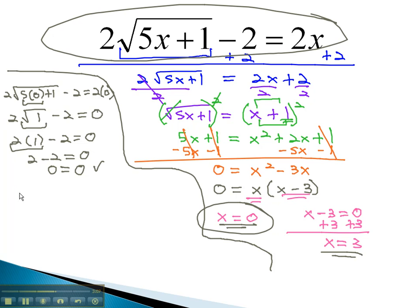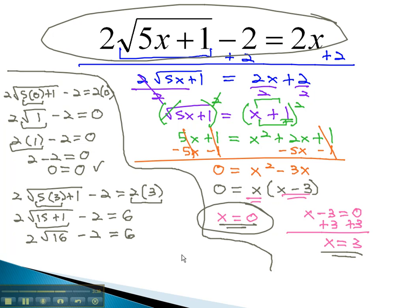Let's also check x equals 3. 2 times the square root of 5x, or 5 times 3, plus 1, minus 2, equals 2x, or 2 times 3. Multiplying first, we get 2 times the square root of 15, plus 1, minus 2, equals 6. 15 plus 1 is 16, so we have 2 times the square root of 16, minus 2, will hopefully equal 6. The square root of 16 is 4, and 2 times 4 is 8, minus 2, does, in fact, equal 6. It checks out again. This means x equals 3 is also a solution to this equation.